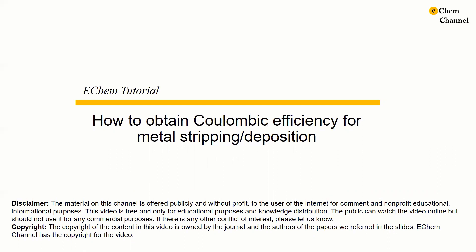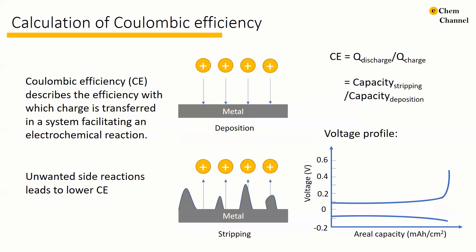Unlike in a supercapacitor where we always obtain the Coulombic efficiency from the CV or GCD curve, the Coulombic efficiency of metal stripping and deposition is obtained from the voltage profiles. More generally, the Coulombic efficiency describes the efficiency with which the charge is transferred in a system facilitating an electrochemical reaction.